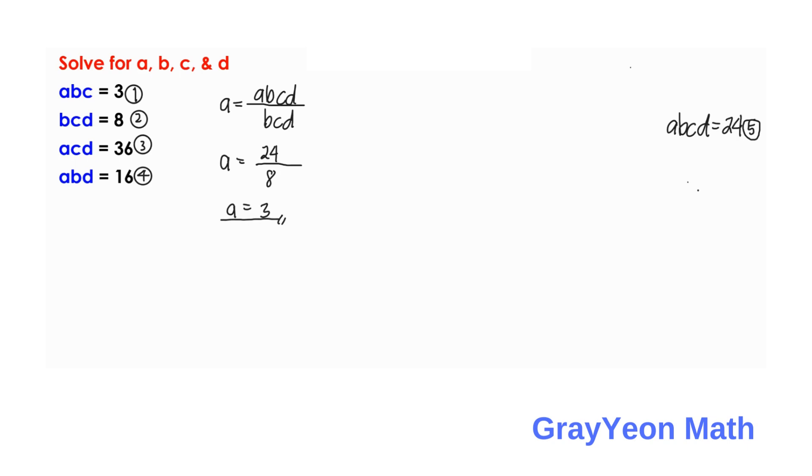For b, we have to divide abcd by acd. So, b is equal to 24, divided by acd, and that is equation number 3. So, 36. So, b is equal to 2 thirds.